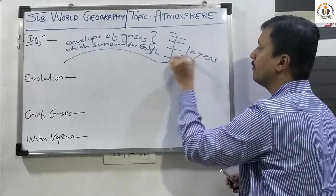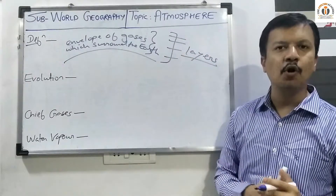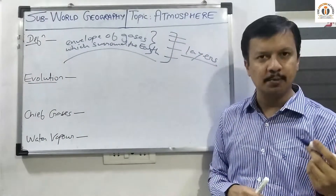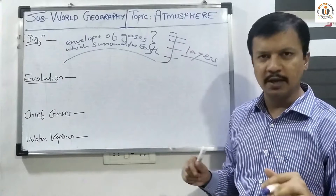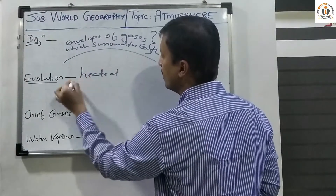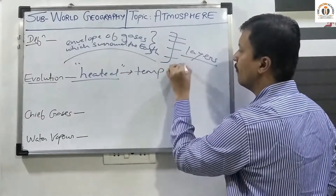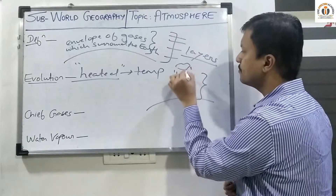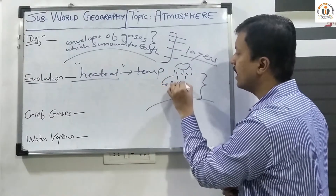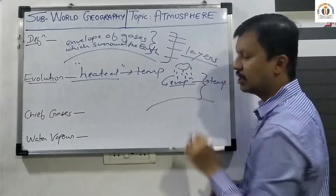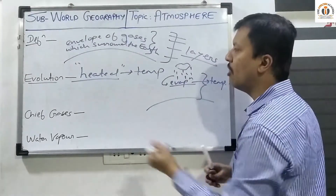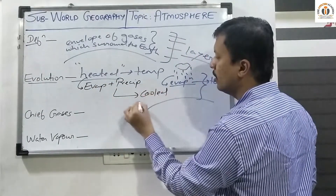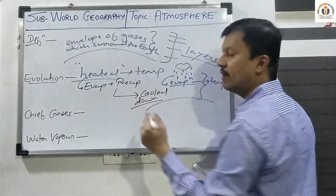Atmosphere itself is divided into different layers, and this is what we will be studying — the properties and significance of different layers of atmosphere. If we look at the evolution of atmosphere, the atmosphere we see today was not the same earlier. The earth was superheated, and before rain drops could fall on the ground, the rainfall in the air itself used to get evaporated because of this high temperature. But then, because of the successive cycle of evaporation and precipitation over a period of years, the atmosphere ultimately cooled down.